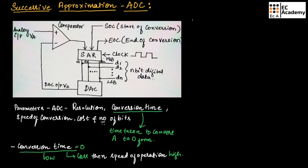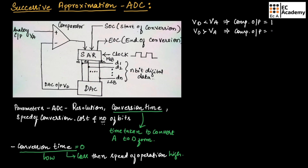The comparator compares the analog input signal VA with the output of the DAC, VD, and provides the output to the SAR. If VD is less than VA, the comparator output will be 1. If VD is greater than VA, the comparator output will be 0. And if VD is equal to VA, then end of conversion will be 1 and the digital output is obtained.